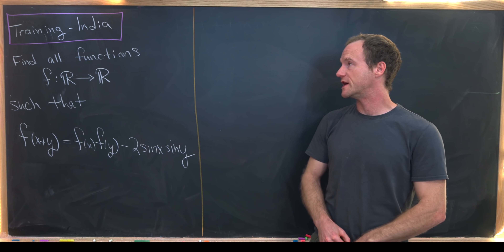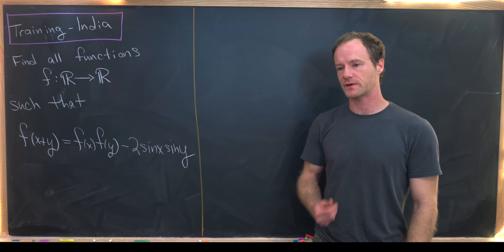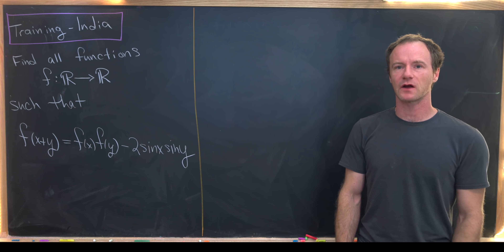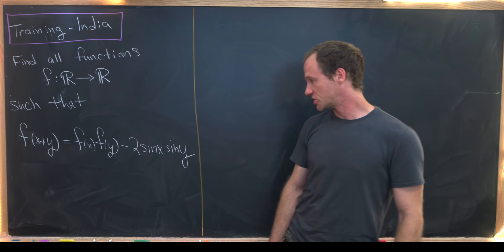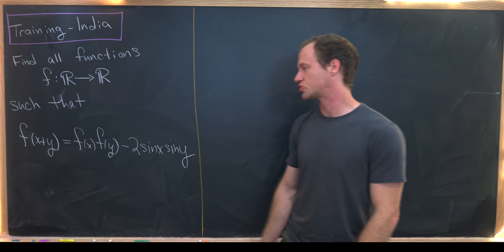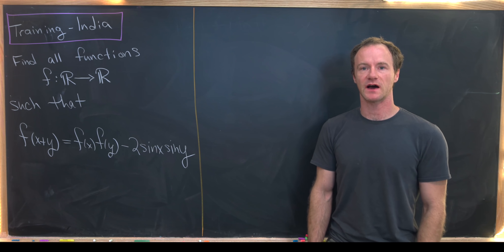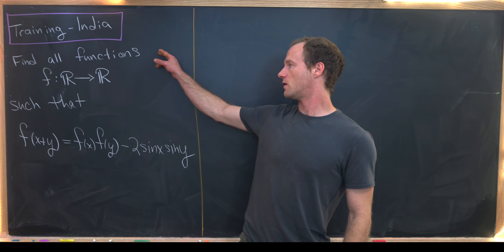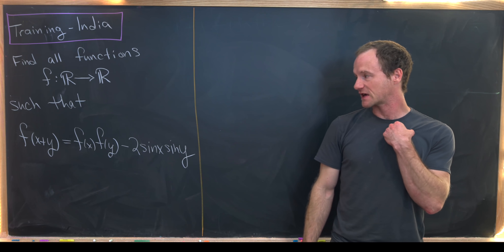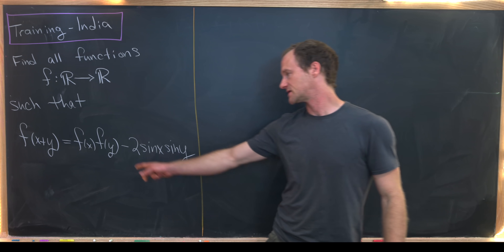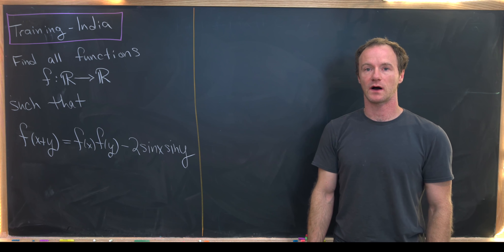Here I've got a nice functional equation that came from a training set for the Indian Mathematical Olympiad. One thing I really like about this problem is that it is a functional equation that involves trigonometric functions. Our goal is to find all functions from ℝ to ℝ such that f(x+y) = f(x)·f(y) − 2·sin(x)·sin(y).